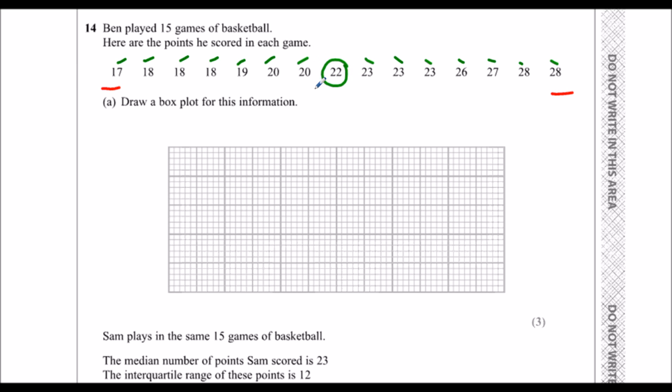And then the quartiles. So if I chop this in half, so half this side, half this side, and I work out almost the median again. So 1, 2, 3, 1, 2, 3. So 18 is the lower quartile.